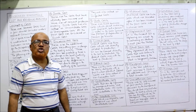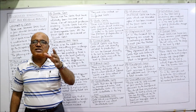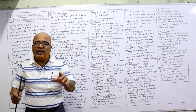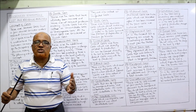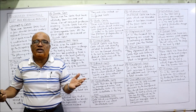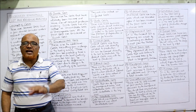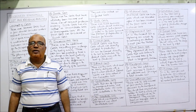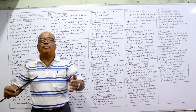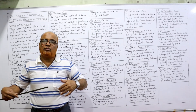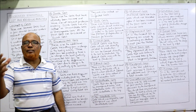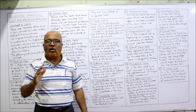Next comes discretionary cost — a cost which is decided by the management and is not directly related to production. If management wishes, they will incur it; if not, they will not. An example is advertisement. Advertisement is a discretionary cost because it is not related to the cost of production but is decided by the management. Management decides whether to advertise or not, and once decided, they can also withdraw it later.